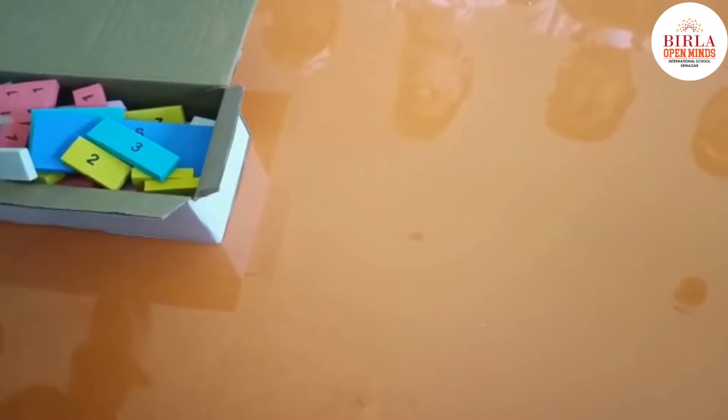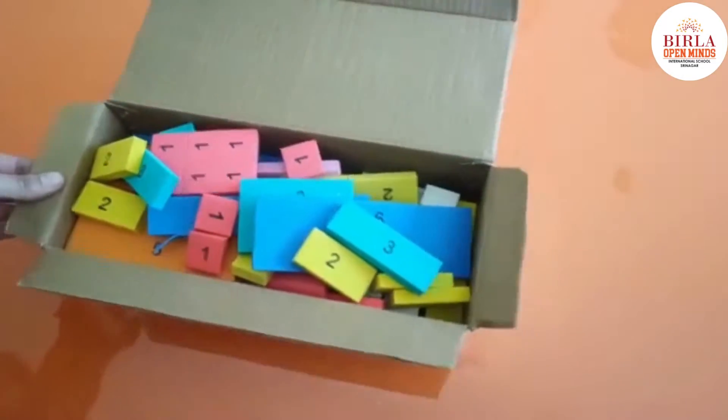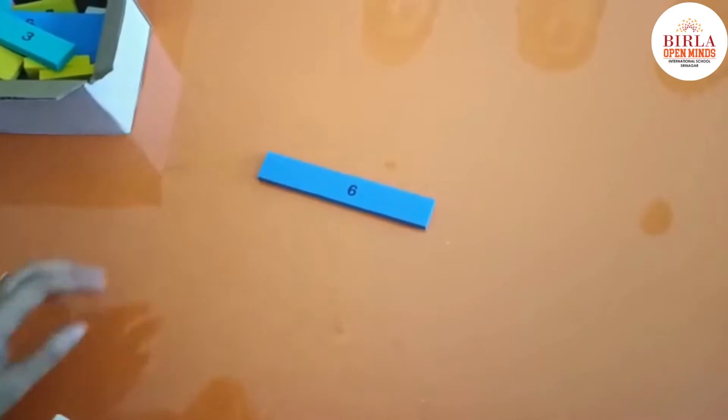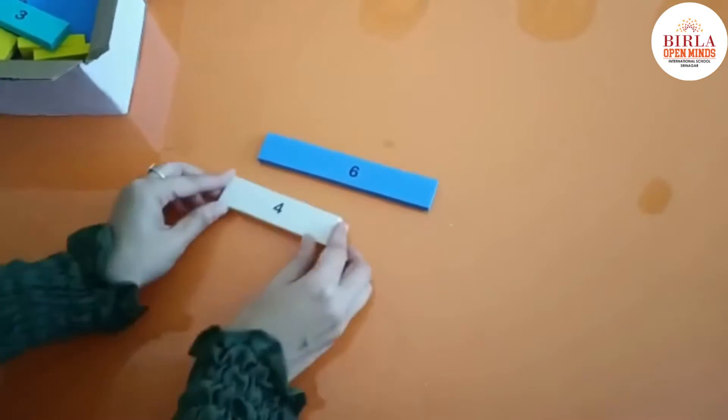Okay students, we will find the HCF of two numbers using Cuisenaire strips. These are the Cuisenaire strips. The numbers which we have selected today are 6 and 4. We will put a strip of 6 over here. The next number is 4.